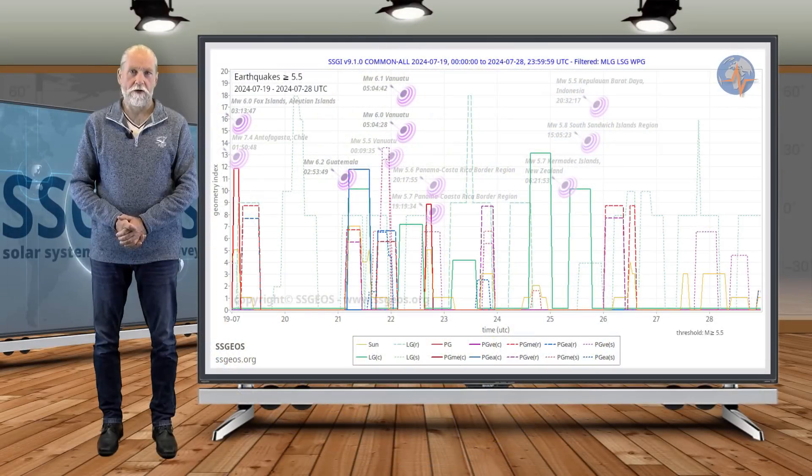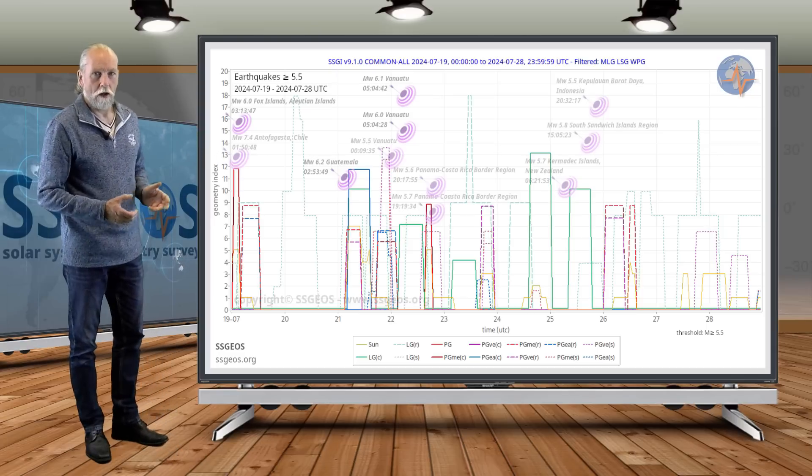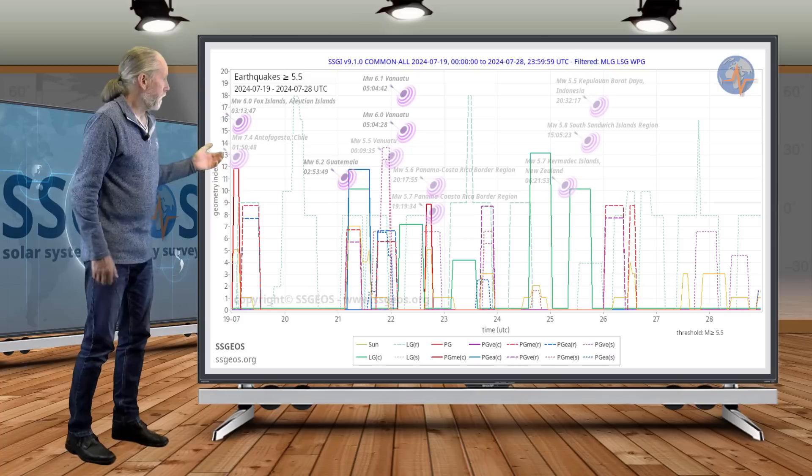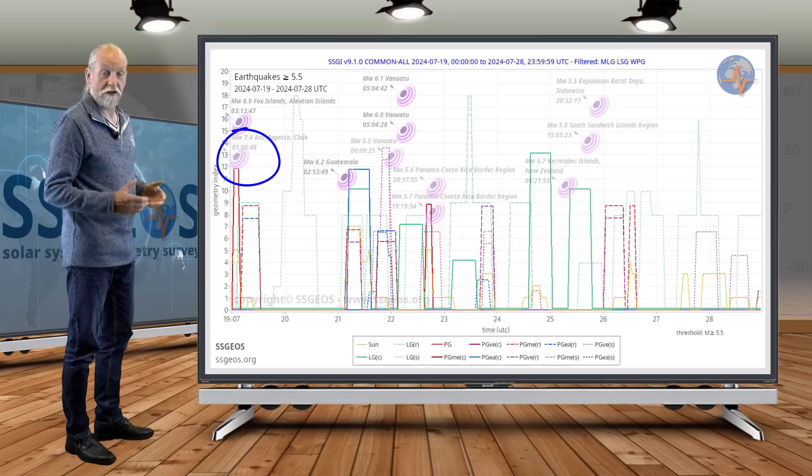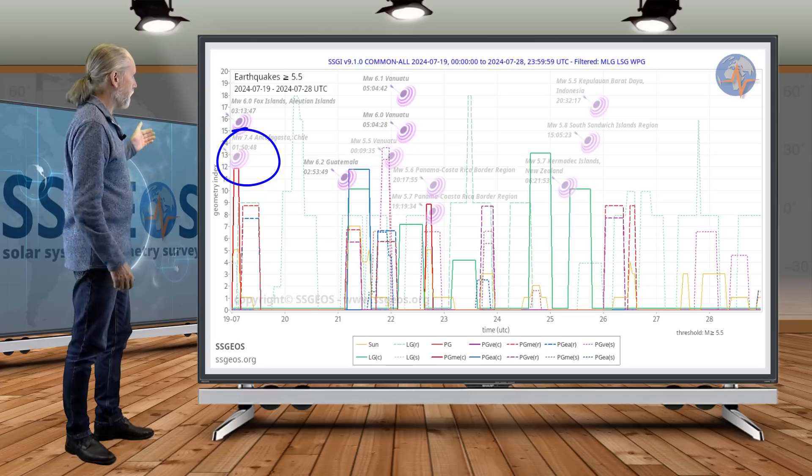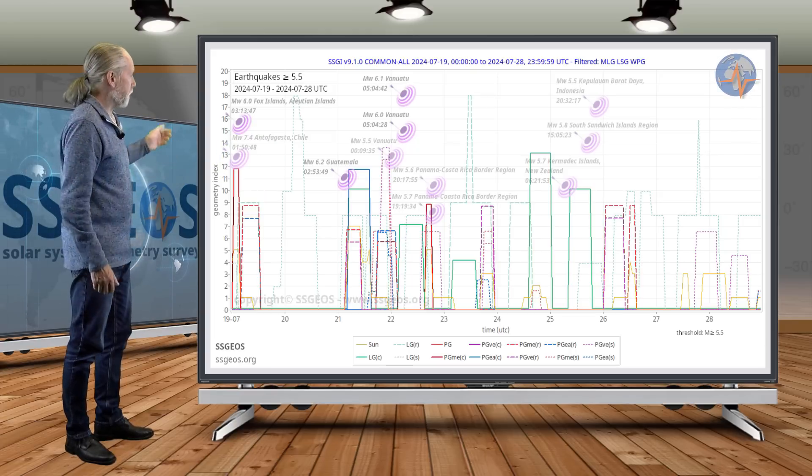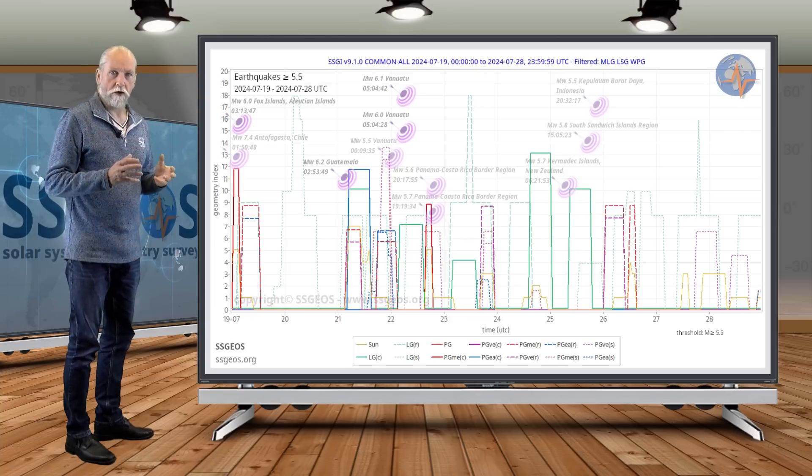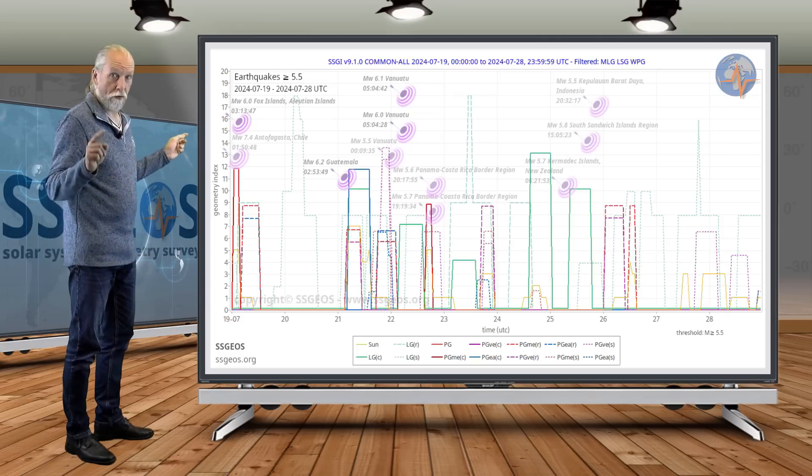Welcome to a new planetary and seismic update. As usual, we start with the SSGI graph of the previous time frame with magnitude 5.5 and larger earthquakes projected. What we see is the 7.4 that I discussed in the previous update, which was not triggered by the planetary conjunction you see there, but by the lunar geometry that preceded that large earthquake. You may want to look up the previous update for that analysis.